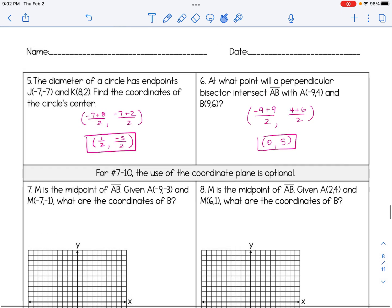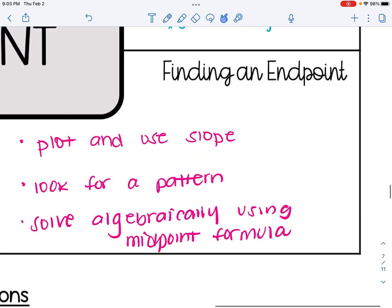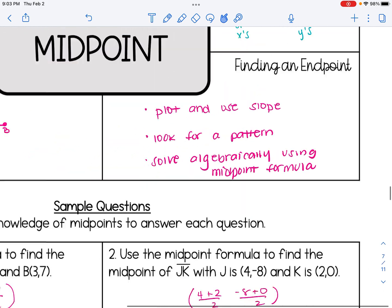For the last four problems, 7 through 10, it says the use of the coordinate plane is optional. So in each of these problems, you are given the midpoint, and you're asked to find one of the endpoints. This is what we talked about before when we said we sometimes are asked to find an endpoint. And there are different methods. You could plot and use the slope, you could look for a pattern, or you could solve algebraically using the midpoint formula. For number 7, I'm going to use this first method, plot and slope. For 8, I'm going to look for a pattern. For 9, I'm going to solve algebraically.